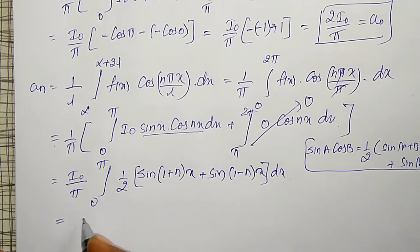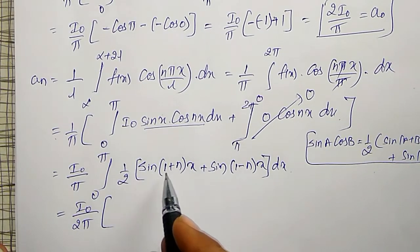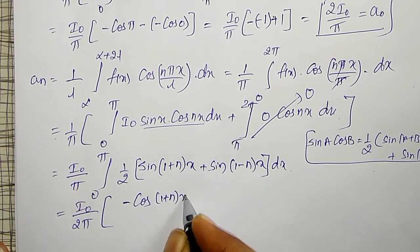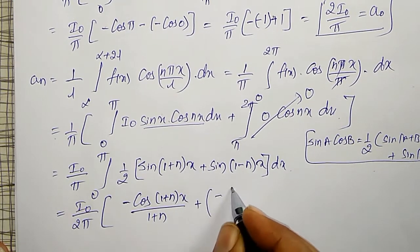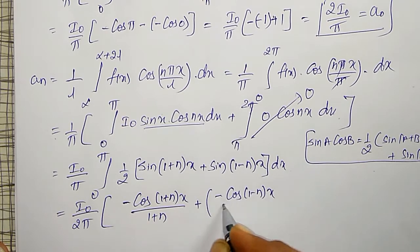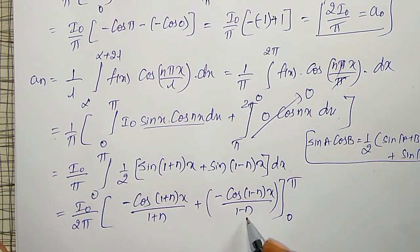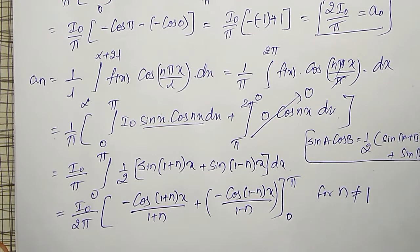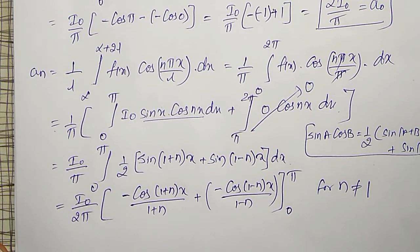Integrating: (I₀/2π)[−cos(1+n)x/(1+n) − cos(1−n)x/(1−n)]₀^π, evaluated between limits 0 to π. This result is valid for n ≠ 1, since for n = 1 the denominator becomes zero and the terms become infinite.